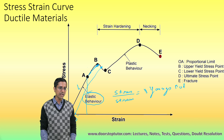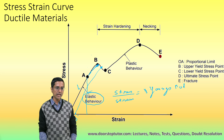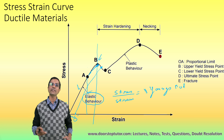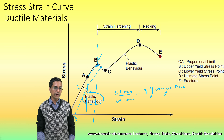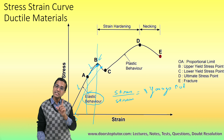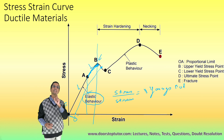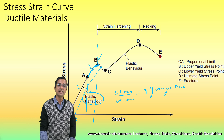Even after removal of the stress beyond point B, there would be some amount of strain remaining. Point B is known as the elastic limit — this is the last point till which the material is purely elastic and would revert back to its original condition. Between point A and B, the material is elastic but does not show a linear relationship between stress and strain, so Hooke's law is not applicable in that region.